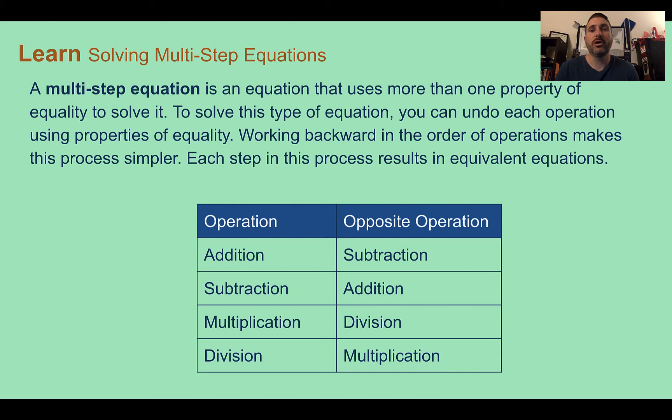We're going to go backwards from order of operations. So if we see adding or subtracting, we're generally going to do that first. Then if we see multiplication or division, we would do that next. If we see exponents, we're probably going to do that third. And then, as we'll learn in future lessons, when we see parentheses, sometimes you're going to want to get those parentheses by itself by doing everything around it.